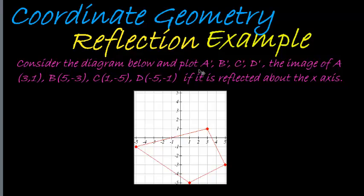Consider the diagram below and plot the points A', B', C', and D', the image of A where A is (3,1). Let's decide which one that is. 3,1, that means this one is A.